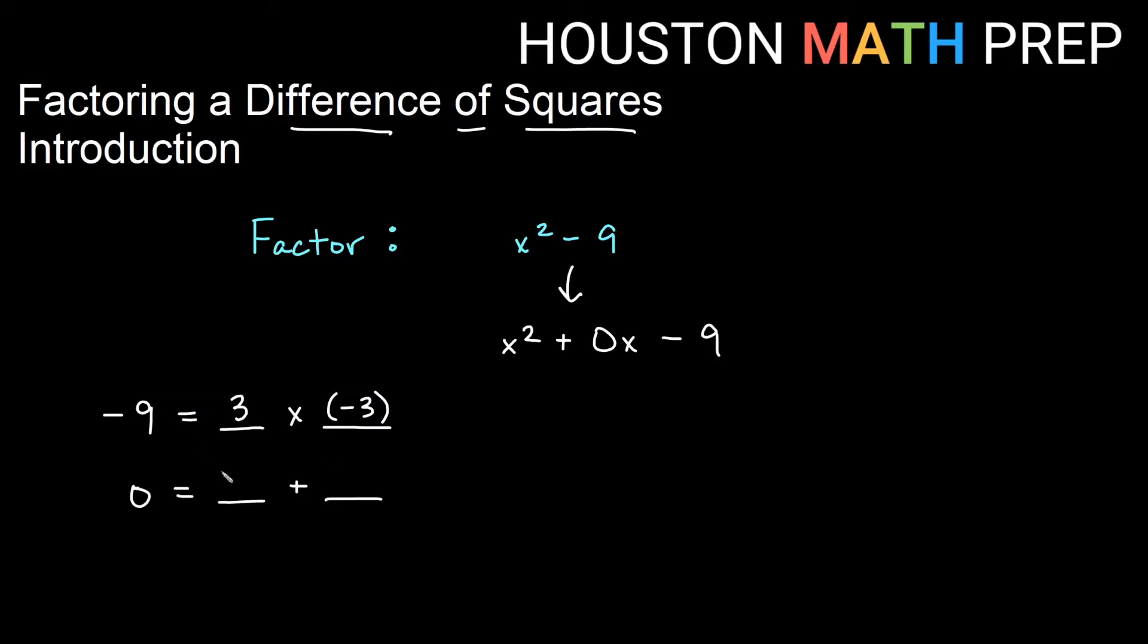3 times negative 3 will give you negative 9. And 3 plus negative 3, in other words, 3 minus 3, will give you zero. So according to our a equals one shortcut, that means that this would factor as x plus 3, using the positive 3, and x minus 3.